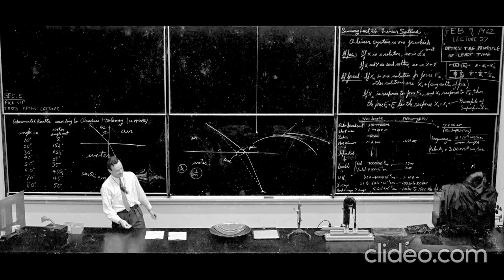So the hotter it is, the wilder the dance party, and the more molecules escape. Now, Feynman being Feynman, he lays down this mind-blowing equation. And bear with me, just a touch of math here. The rate of evaporation is proportional to E to the power of negative W over KT. Looks a bit intimidating. Break it down for us.